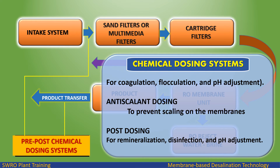Chemical dosing systems include: dosing for coagulation, flocculation, and pH adjustment; antiscalant dosing to prevent scaling on the membranes; and post-dosing for remineralization, disinfection, and pH adjustment.